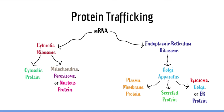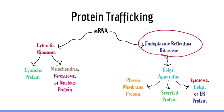Here we can see a simple flow chart showing all the possible destinations that a protein can take. As we said before, there are two general pathways which differ based on whether or not they use vesicles. Proteins made in endoplasmic reticulum ribosomes always use vesicle-mediated trafficking.